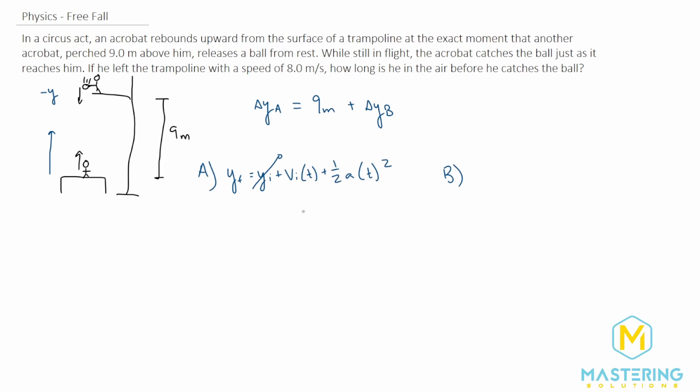It's a free fall problem. Obviously that makes sense. Once he jumps off of the tramp, the only acceleration acting on him is gravity pulling him down. And since we have final minus initial for anything delta, if we were to have moved this over, the y_final and delta y for the acrobat, it's the same thing.